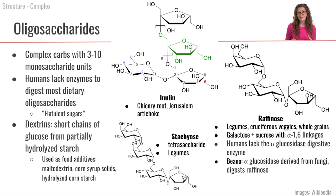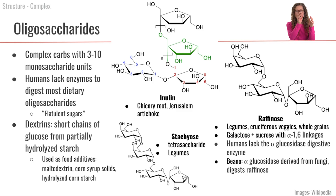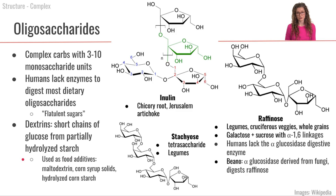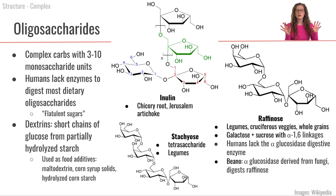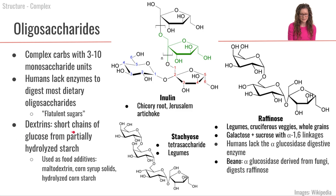Another category of oligosaccharides is called dextrins. Dextrins are several glucose molecules all bound together with alpha-1,4 linkages, and they come from partially hydrolyzed starch. In the process of digesting starch, we break the large starch down into smaller components called dextrins, which are in that three to ten monosaccharide glucose length.